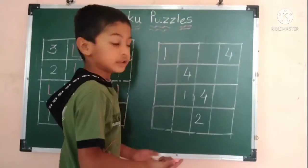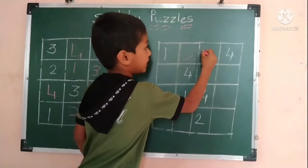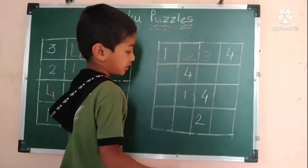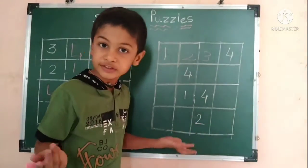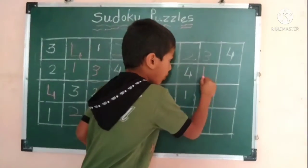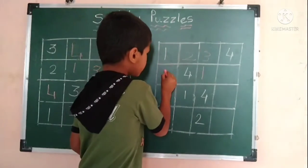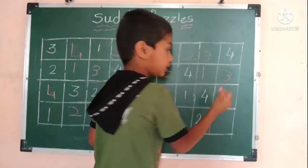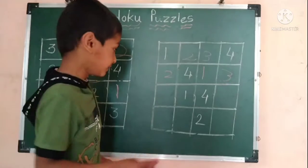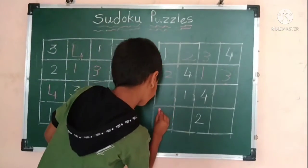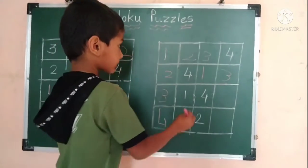One and four — which numbers are missing? Two and three. Two, three, four — which number is missing? One. One and four — which numbers are missing? Two and three. One and two — which number is missing? Four. Three. Three.